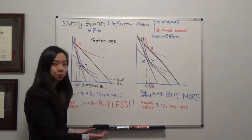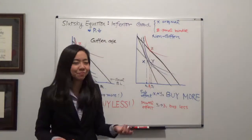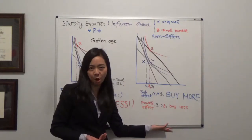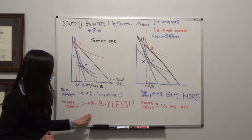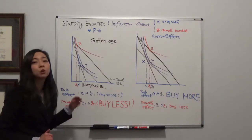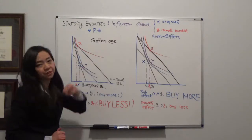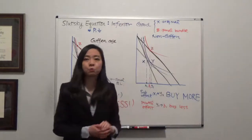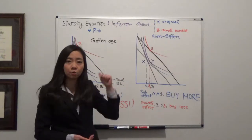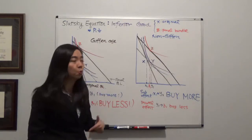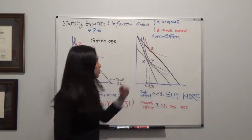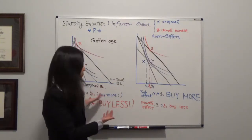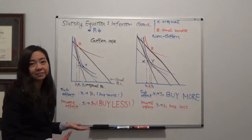So what you're going to end up doing really depends on whose voice is louder. If the substitution effect is louder than the income effect, then you're going to end up following the law of demand. But if the income effect is louder than the substitution effect, then you're going to violate the law of demand and have a Giffen good. In both diagrams, we have x as our original bundle before the price of good one goes down, and after the price of good one goes down, we end up buying bundle z. Whether we buy more or less of good one depends on whether the substitution effect or the income effect is louder.